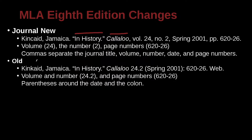The old way was similar at the beginning — quotation marks for the smaller part inside a larger container, and underline or italic for the larger container. Then you would have had '24 2' for the volume and number, with Spring 2001 inside parentheses. Now we eliminate the parentheses, add 'pp' for multiple page numbers (or 'p' for a single page), and write out the volume and number.